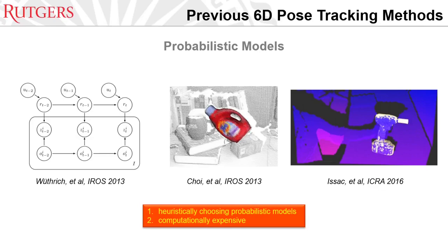Now let's briefly talk about the previous 6D-pose tracking methods. The first category is the probabilistic models. However, for this type of method, it usually requires heuristically choosing probabilistic models. Also, they are often computationally expensive, so they need to be accelerated on a GPU.